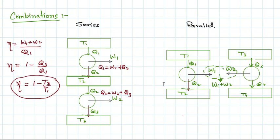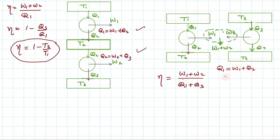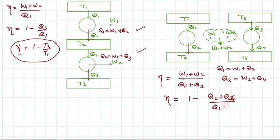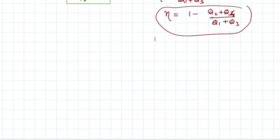For the parallel combination, two heat engines are connected in parallel. The efficiency formula remains: what we get is W1 + W2, and what we paid is Q1 + Q3. Using Q1 = W1 + Q2 and Q3 = W2 + Q4, the efficiency becomes η = 1 - (Q2 + Q4)/(Q1 + Q3). This is the efficiency for the parallel combination of heat engines.